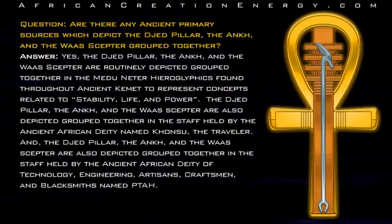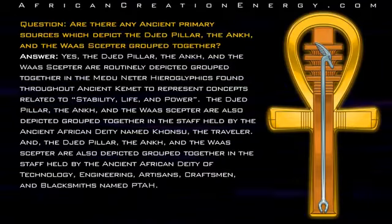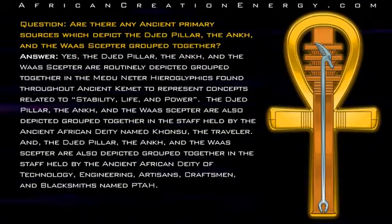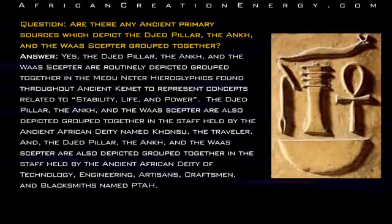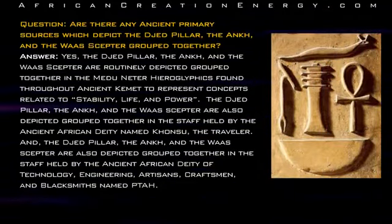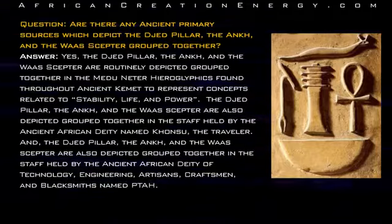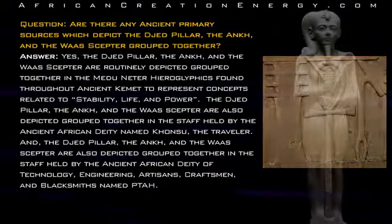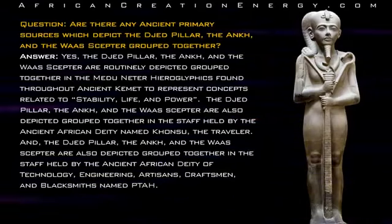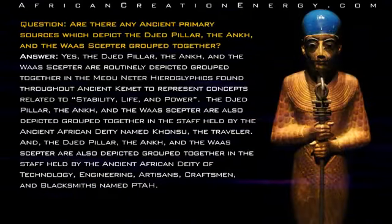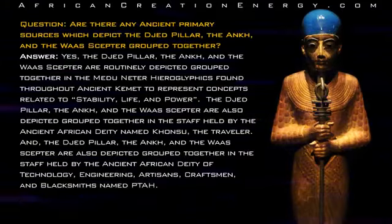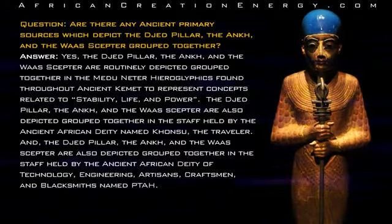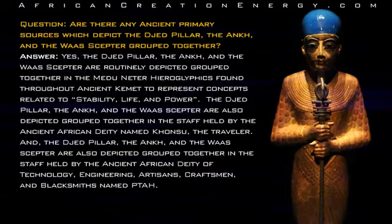Question: Are there any ancient primary sources which depict the Jed Pillar, the Ankh, and the Wa-Sceptor grouped together? Answer: Yes. The Jed Pillar, the Ankh, and the Wa-Sceptor are routinely depicted grouped together in the Meduneto hieroglyphics found throughout ancient Kemet to represent concepts related to stability, life, and power. They are also depicted grouped together in the staff held by the ancient African deity of Technology, Engineering, Artisans, Craftsmen, and Blacksmiths named Pata.